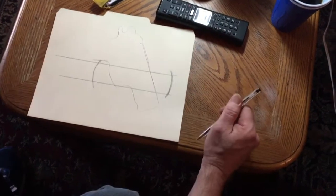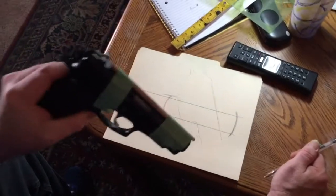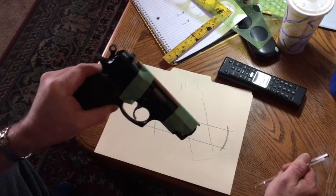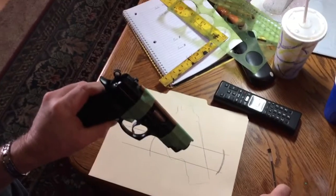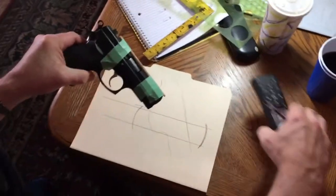Now, this does have a sight rail. For God's sakes, people. If you're going to draw a pattern, make it so you don't have to alter it. Draw it with the sight rail on the gun.